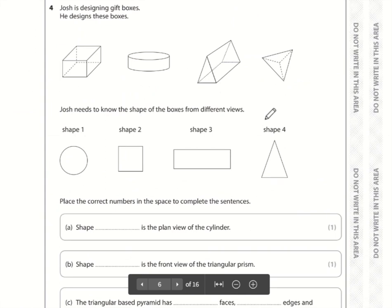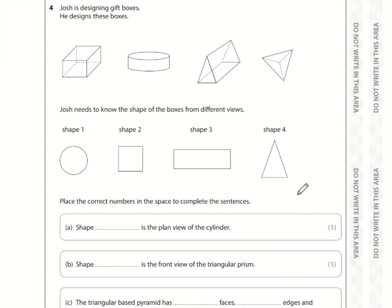Question number 4. Which shape is the plan view of the cylinder? Remember, the plan view is the view from above. If we're looking from above at a cylinder, we are just seeing a circle. So that is shape 1.